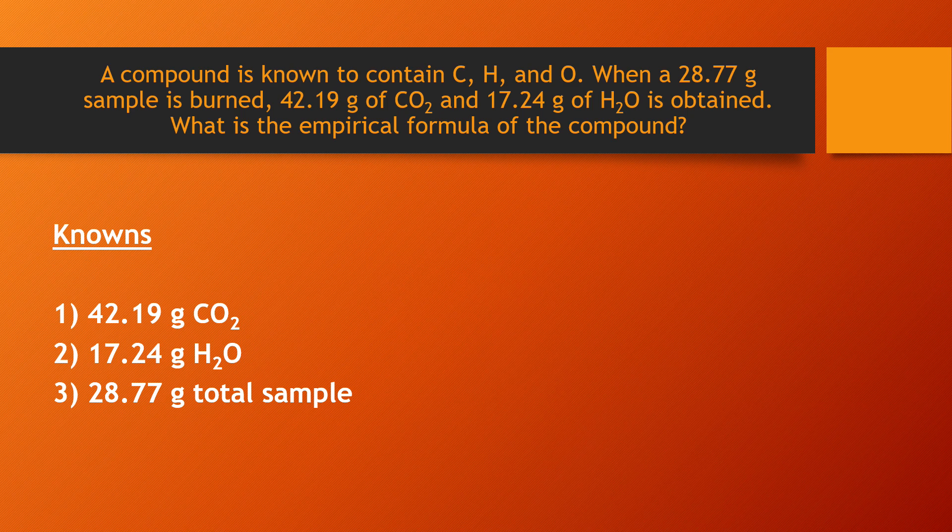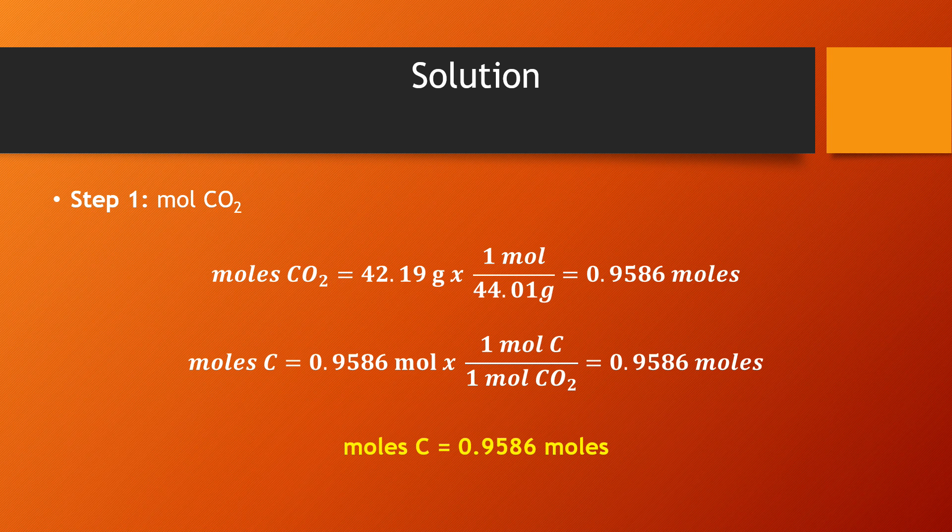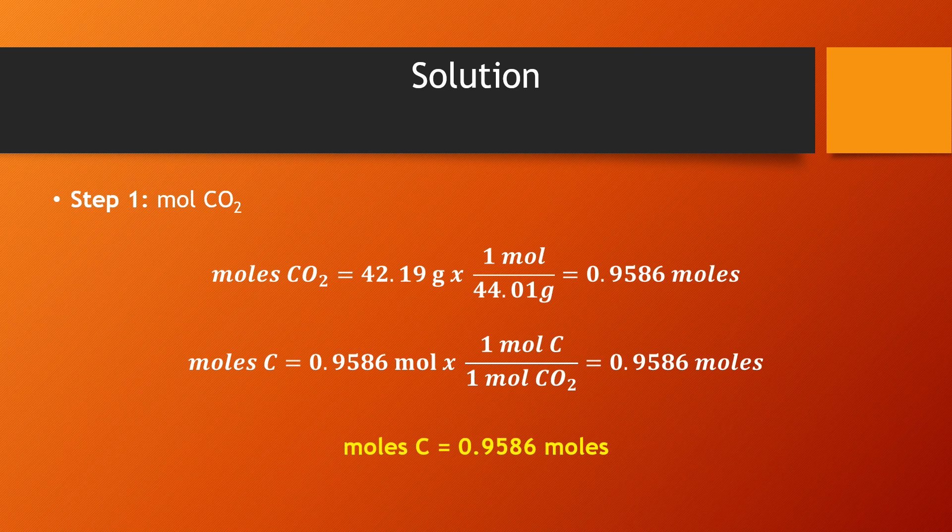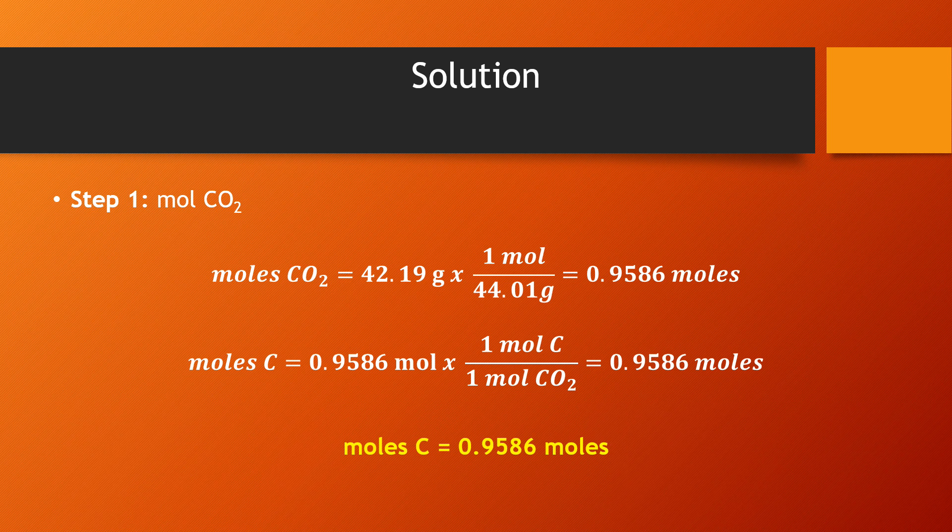In order to find the breakdown of carbon, hydrogen, and oxygen, we will need to convert these given values to moles. Step one: We first take 42.19 grams of carbon dioxide and divide it by its molar mass to obtain the number of moles of carbon dioxide. By looking at the mole ratio, we can see that there is one atom of carbon in CO2. Thus, the number of moles of carbon is 0.9586 moles.